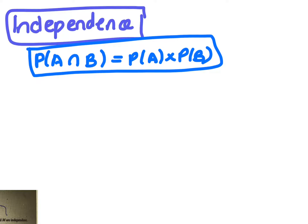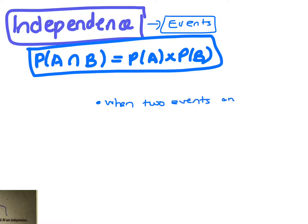I just want to talk about independence and what independent events are. An independent event is when you have two events and they stand independently of each other, so they don't affect each other. They're independent of each other.